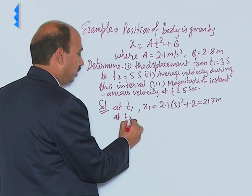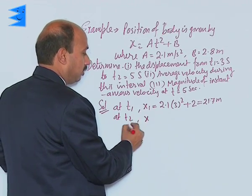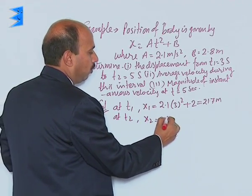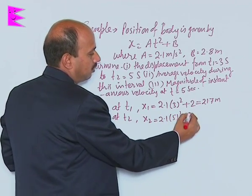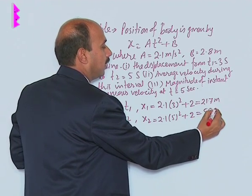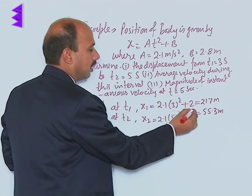Similarly, you can calculate at t₂, x₂ = 2.1 into 5 square plus 2, that is equal to 55.3 meter. You can calculate this and this.